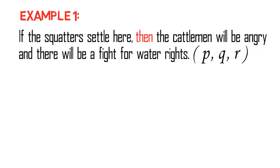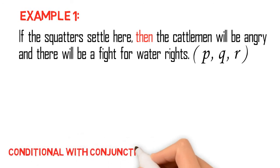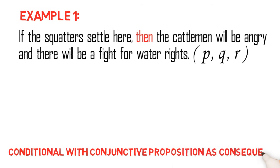Now, as we can see, this example is a combination of a conditional proposition and a conjunctive proposition. However, if we analyze the proposition, it becomes clear to us that it is a conditional proposition whose consequent is a conjunctive proposition. Thus, the major connective in this proposition is then.